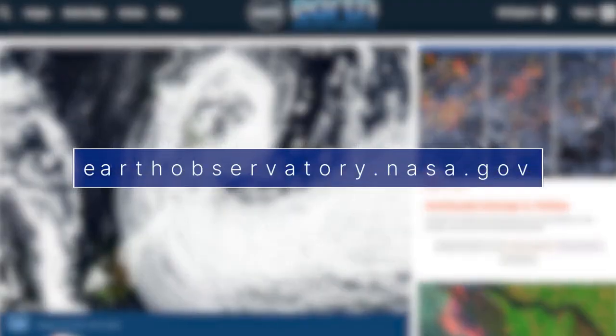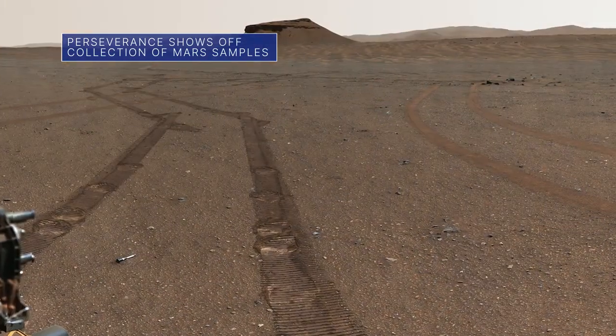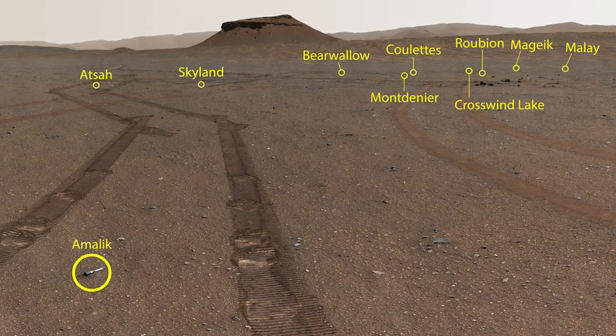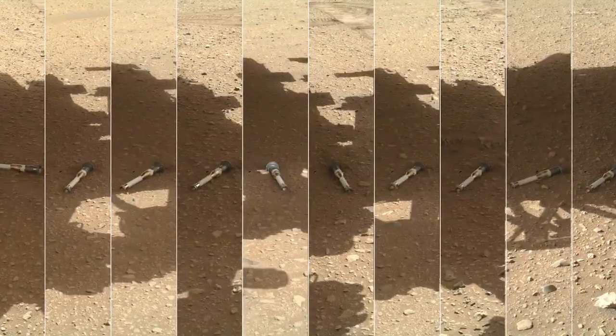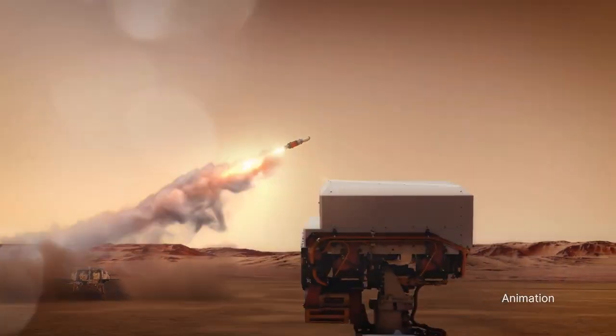Learn more at earthobservatory.nasa.gov. NASA's Perseverance Mars rover provided a panorama of its recently completed sample depot. The panorama shows the placement on the Martian surface of the 10 sample tubes that could be recovered in the future by the Mars Sample Return campaign.